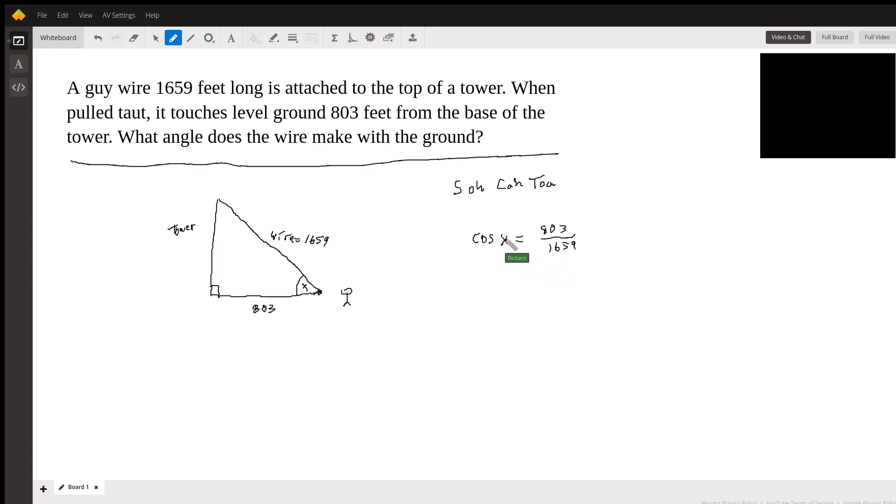And then we're just going to take the inverse cosine of each side, so it gives us x equals inverse cosine of 803 over 1659.